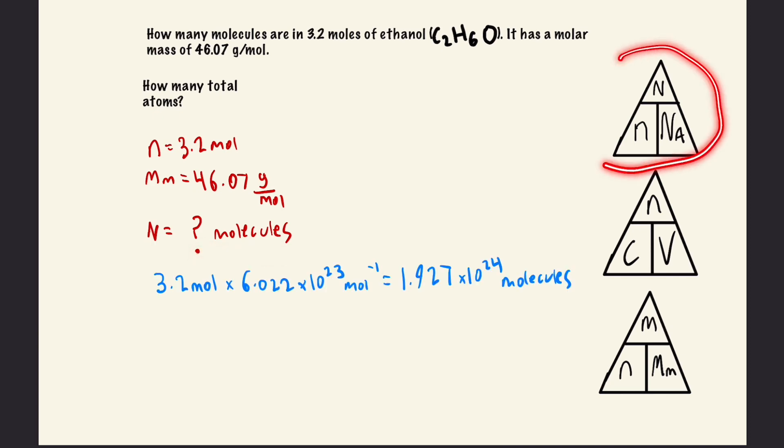The triangle we can use is this one up here. We have 3.2 moles, which is this term, and we have Avogadro's number already. We already know that constant.